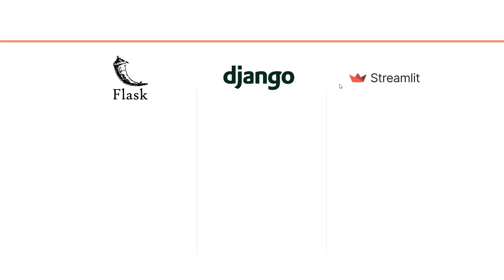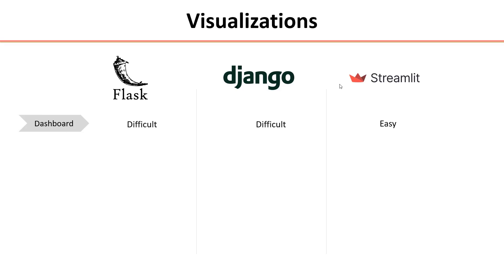Let's look into the visualization support by all three frameworks. First, we can easily create dashboards in Streamlit, whereas in Django and Flask it is a bit difficult. Streamlit straight away supports the most useful libraries for building visualizations in Python, that is matplotlib and seaborn. Whereas in Flask and Django, they won't directly support matplotlib and seaborn — we need to save our figure and then display it in our web app.